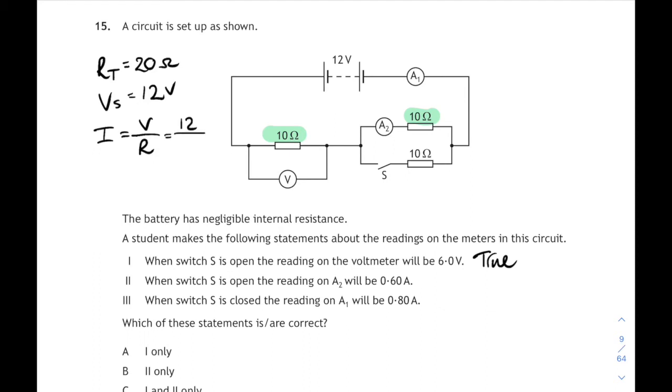Statement two: with the switch open the ammeter will read 0.6 amps. To work out the current we're going to have to use Ohm's law using the fact that with the switch open we've got a total resistance of 20 ohms and a 12 volt supply. So the current i equals v over r, 12 over 20 is 0.6 amps. So with the switch open the current will be 0.6 amps. That's true as well. Statement three: when the switch is closed the reading on ammeter one, that's the ammeter at the top of the diagram, will be 0.8. When the switch is closed we now have two 10 ohm resistors in parallel. The total of them will be 5 ohms.